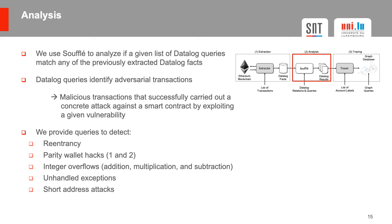We now move on to the analysis. We use the optimized datalog engine called Souffle to analyze if a given list of datalog queries match any of the previously extracted datalog facts. The goal of these datalog queries is to identify adversarial transactions — malicious transactions that successfully carried out a concrete attack against a smart contract by exploiting a given vulnerability. In our paper we present queries to detect reentrancy, the two Parity wallet attacks, integer overflows, unhandled exceptions, and short address attacks.